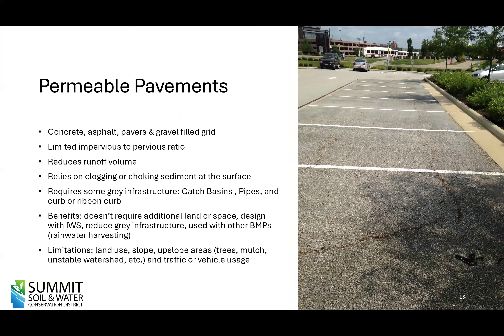The next stormwater control measure is permeable pavement. Since there are multiple systems, it could be concrete, asphalt, pavers, or a grid system. These are limited due to the impervious-to-pervious ratio. In a typical design, you'll see the parking stalls with porous concrete or asphalt, where there's an impervious area draining toward the system. It reduces stormwater runoff and volume by allowing water to permeate through this layer of permeable pavement and enter a gravel bed below. You can design it with internal water storage, just like a bioretention cell, to allow additional infiltration and nitrogen removal. Or you can maintain the underdrain without that internal storage.